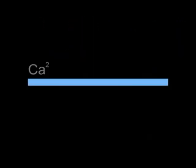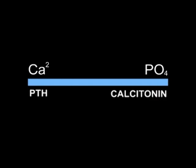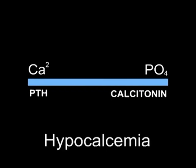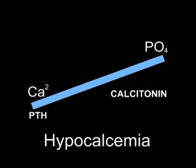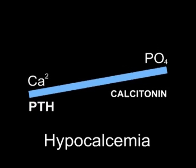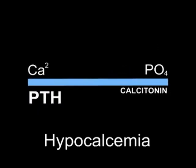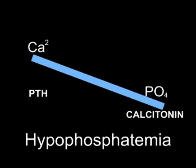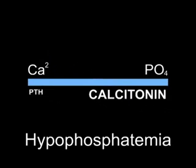During states of calcium and phosphate imbalance, hormones regulate plasma levels of these minerals. During hypocalcemia, wherein calcium levels are low, there will be an increase in parathyroid hormone secretion, while there will be a decrease in calcitonin secretion. However, during hypophosphatemia, parathyroid secretion will decrease and calcitonin secretion will increase.